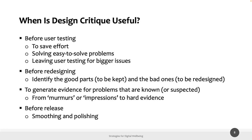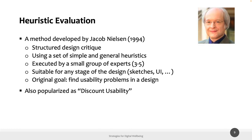This technique can be used at different stages of the design process: before user testing to save effort and solve easy problems, or to decide between two prototypes — you can conduct a heuristic evaluation to decide which prototype is better. It can also be used to generate evidence for problems that are known or suspected. For example, if your mobile application is receiving very bad reviews, you can conduct a heuristic evaluation to understand whether these reviews are reasonable.